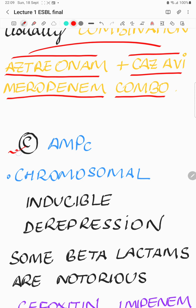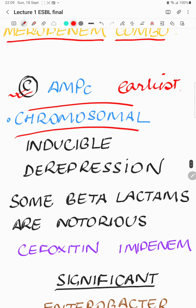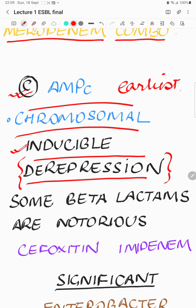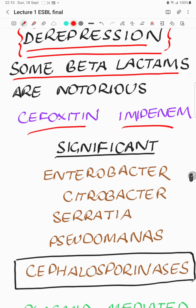We come to group C — AmpC — probably the earliest. AmpC, where 'Amp' stands for ampicillin. This resistance could be chromosomal, meaning the bacteria inherently have this. One property of AmpC is derepression — those carrying it on the chromosome may not be active, but something triggers derepression and the chromosome starts producing AmpC. It is also inducible, generally in the presence of some beta-lactam antibiotics. The notorious inducers are cefoxitin and also the carbapenem imipenem, whose presence causes increased elaboration of the AmpC enzyme.